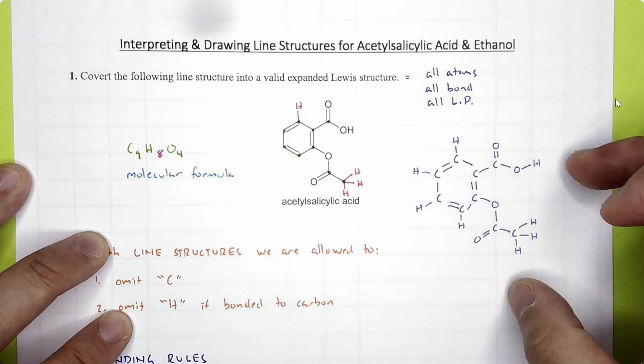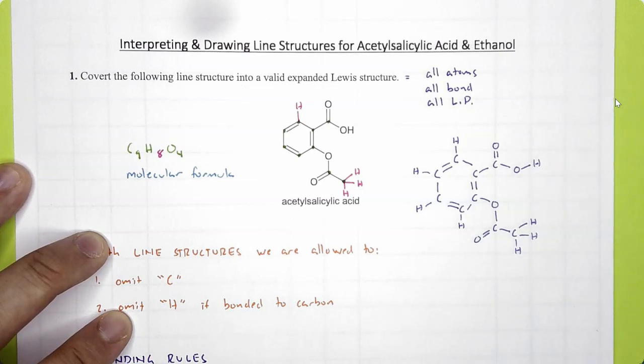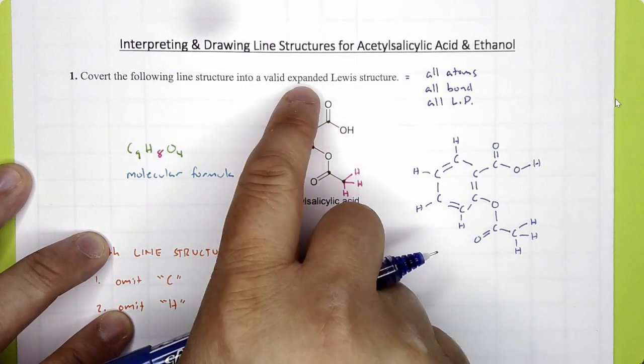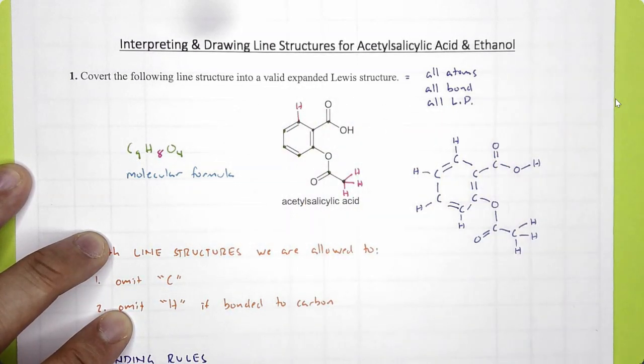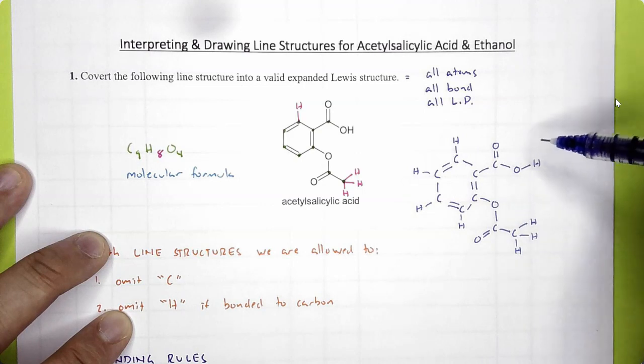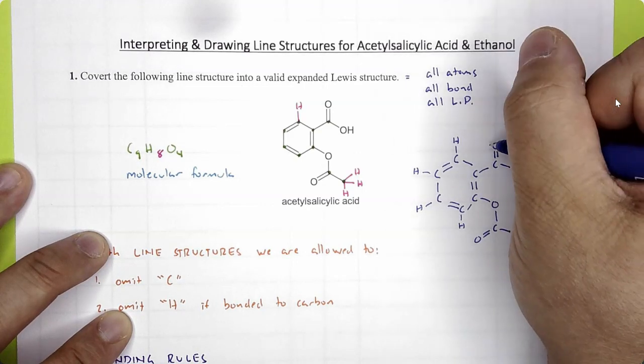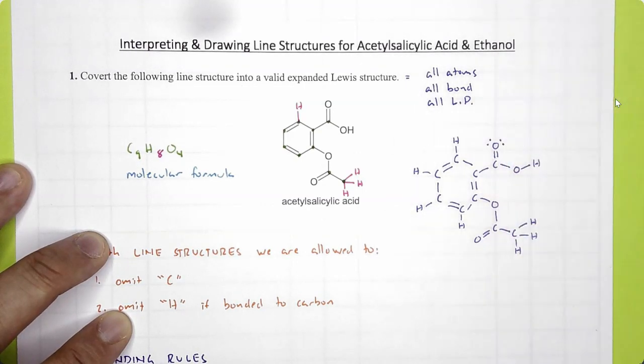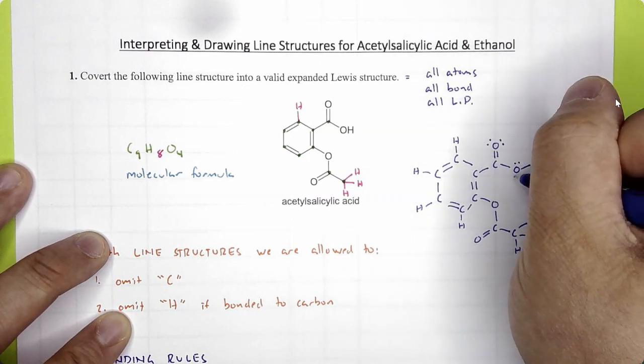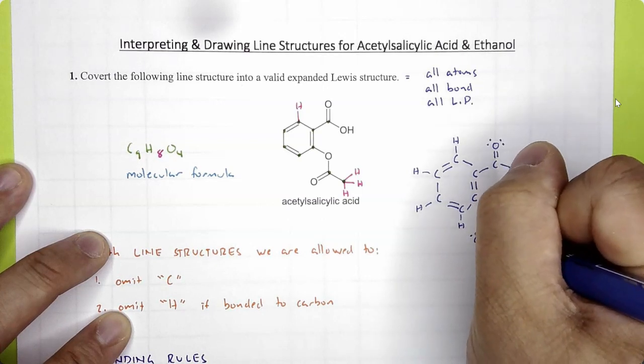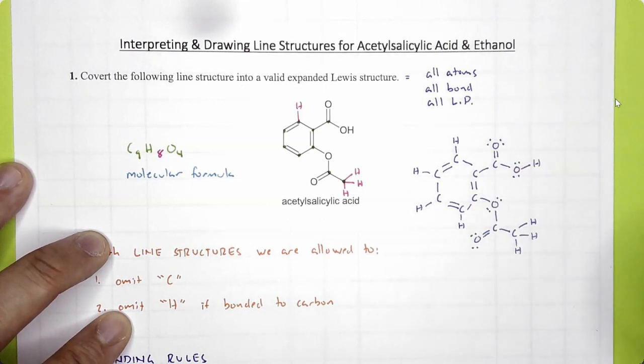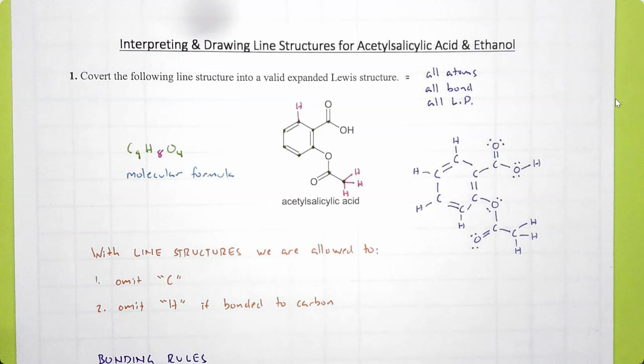Okay, this is what I have for my Lewis structure. Do not forget, for the expanded Lewis structure, you need to explicitly show all the lone pairs as well. Oxygen in the neutral state has two bonds and two lone pairs. Let's add two lone pairs on that oxygen, two lone pairs on this oxygen, two on this, and two on the last. So this is the complete expanded Lewis structure.